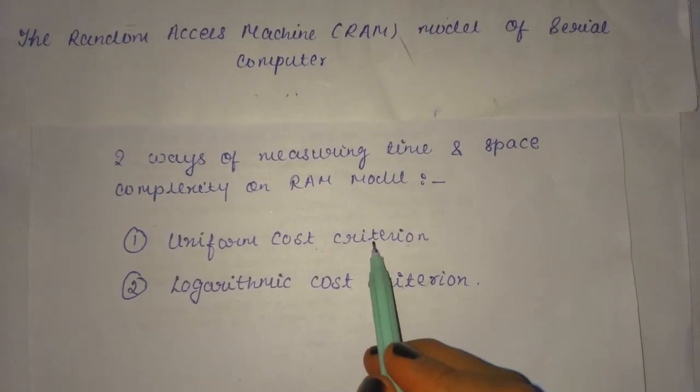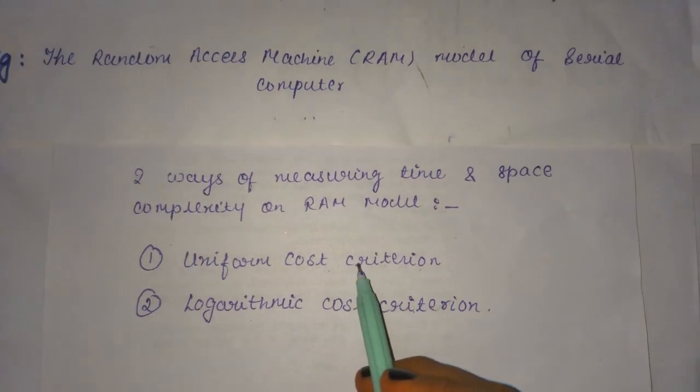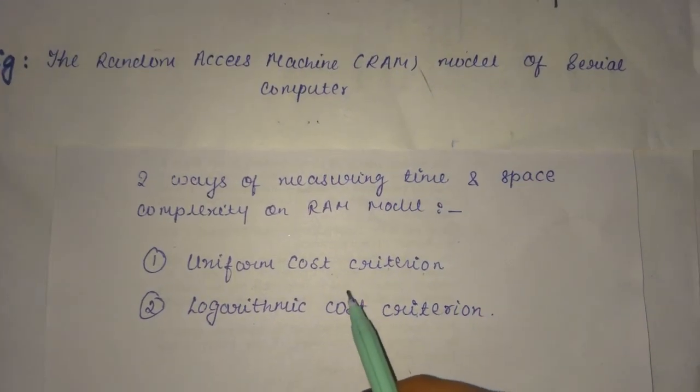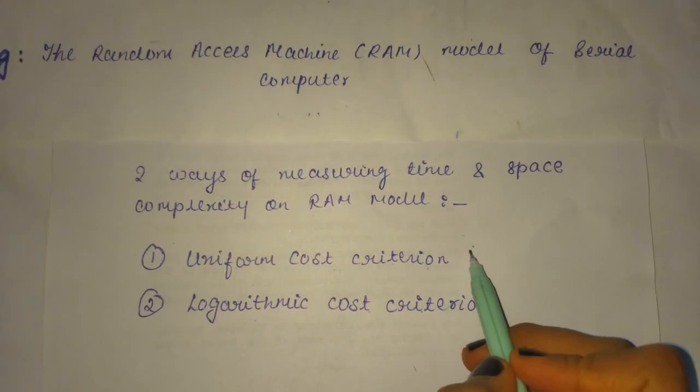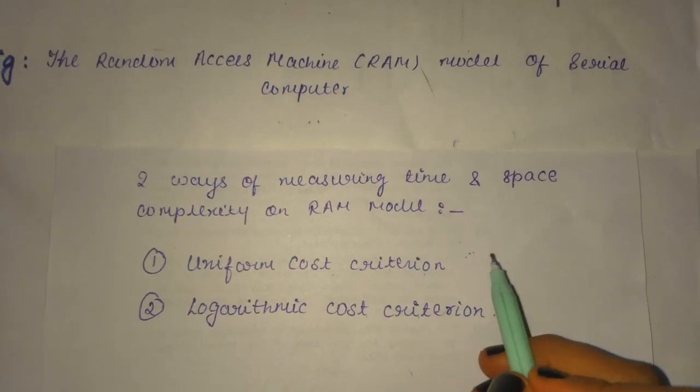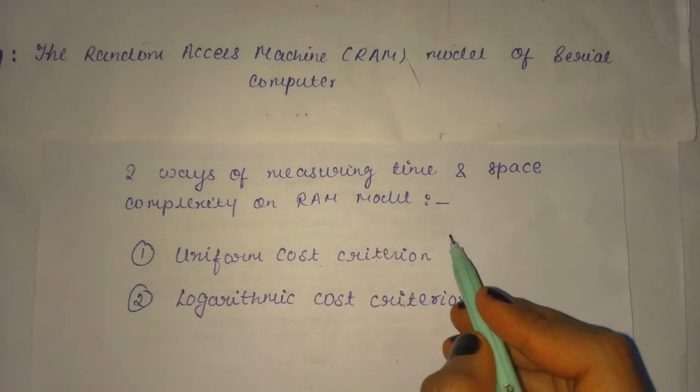The uniform cost criteria says that each RAM instruction requires one unit space only. Each RAM instruction consists of one unit space only.